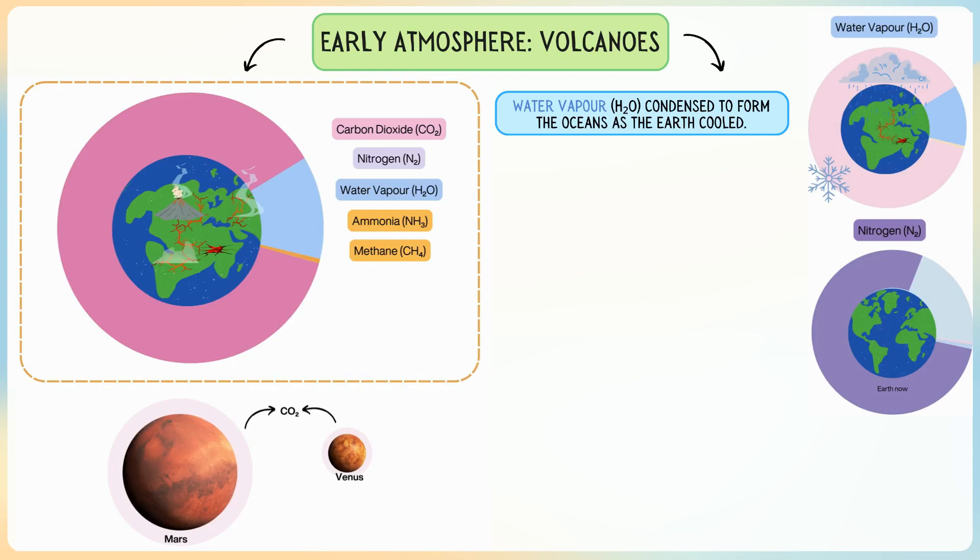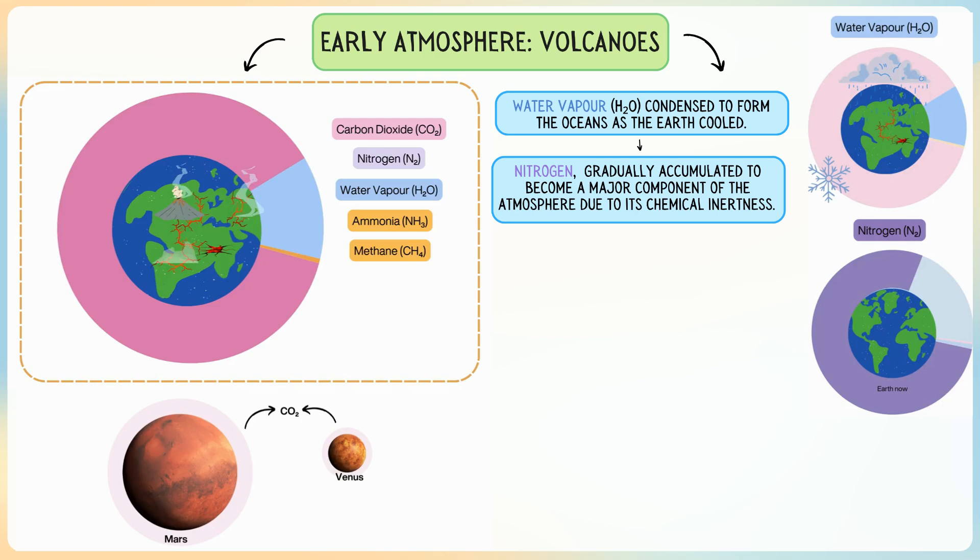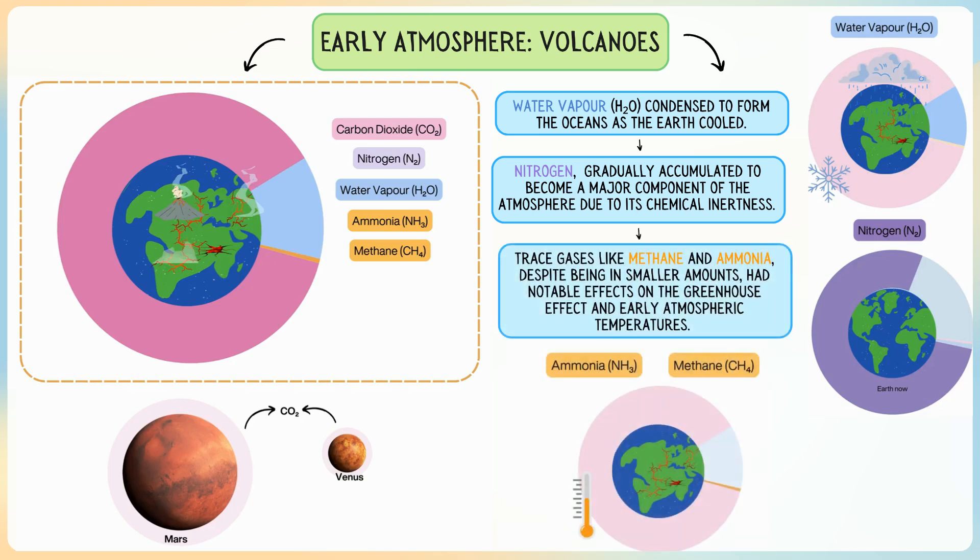Another key gas introduced by volcanic activity was nitrogen, which gradually accumulated to become a major component of the atmosphere due to its chemical inertness. We also discussed the release of trace gases like methane and ammonia, which, despite being in smaller amounts, had notable effects on the greenhouse effect and early atmospheric temperatures.